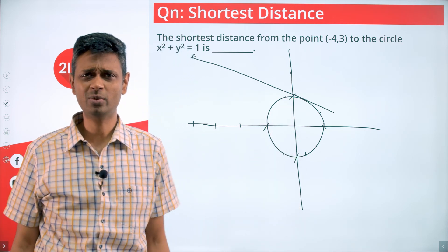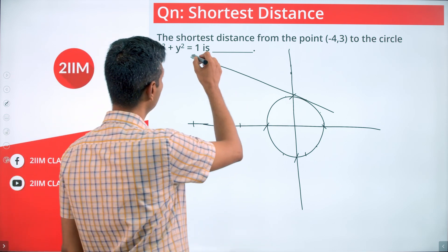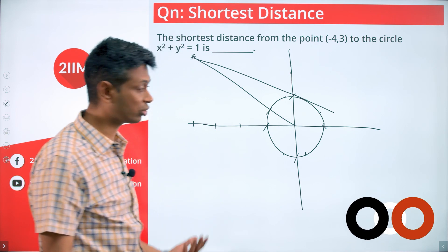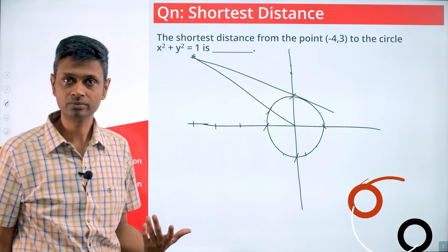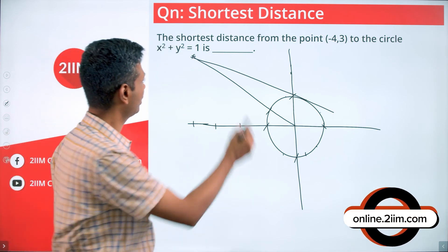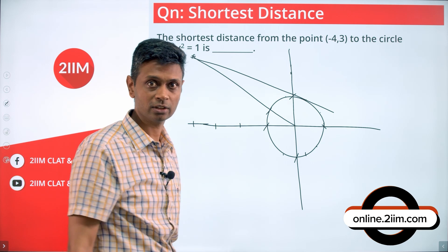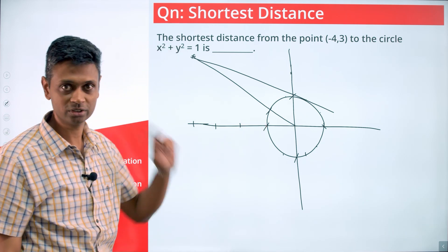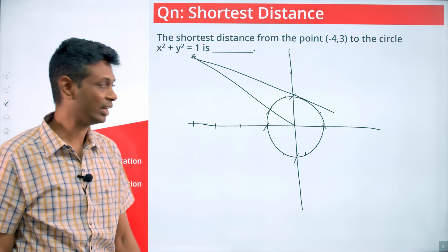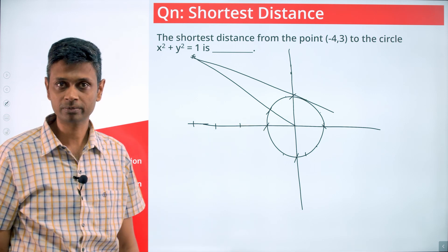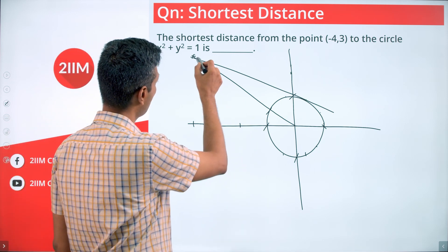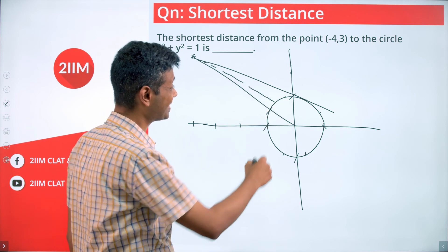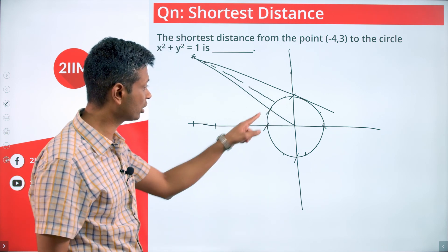The answer is very simple: join this external point to the center. That point where the line meets the circle is going to be the closest point on the circle. Any other point on the circle will be farther away. Think about it — the closest point on the circle is found by joining to the center, and wherever that line hits the circle, that will be the closest point.